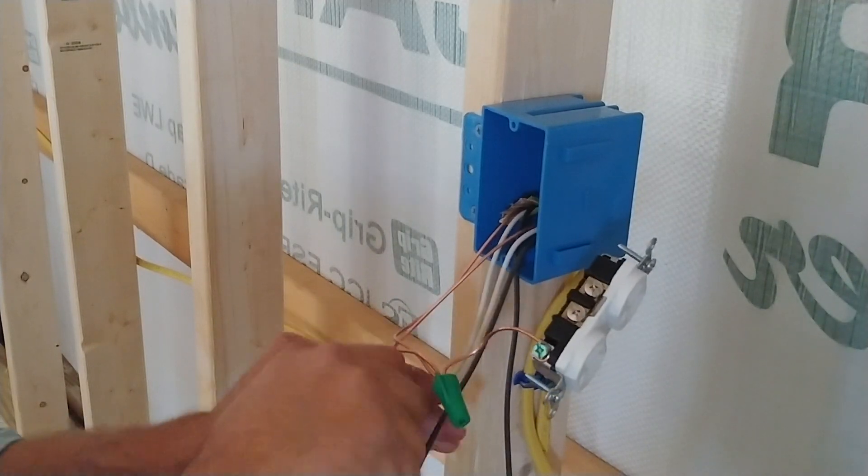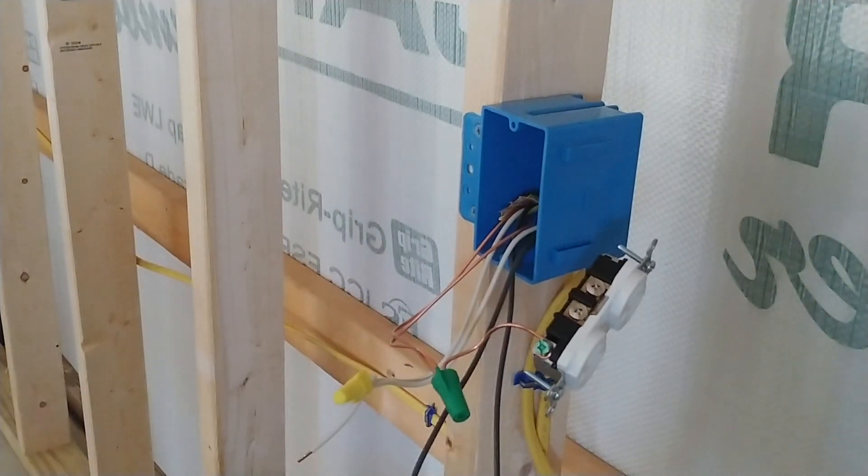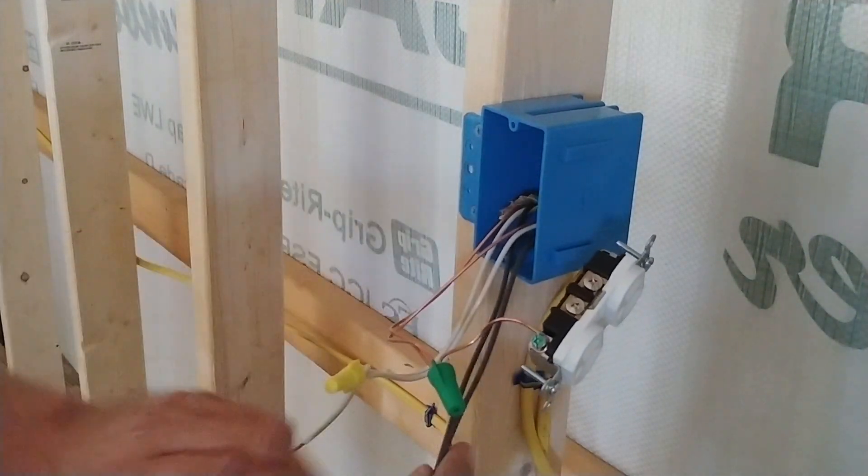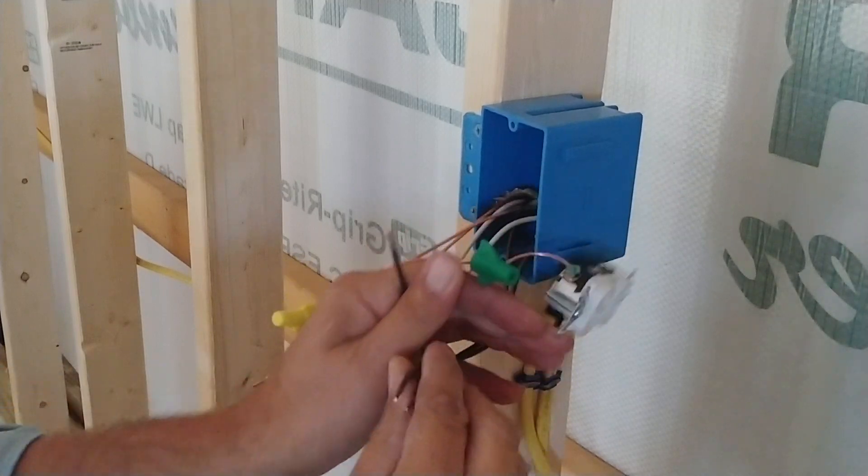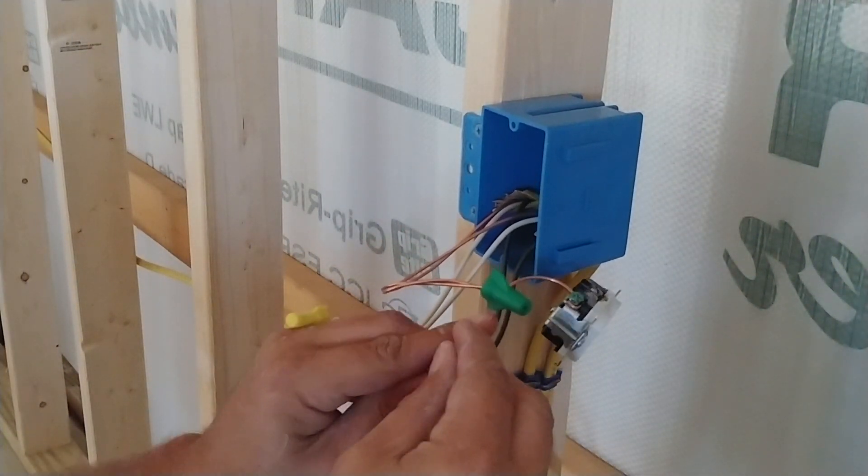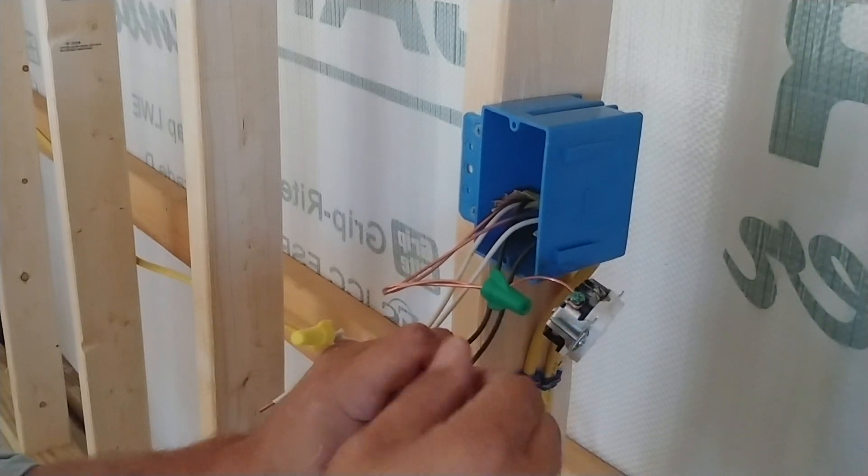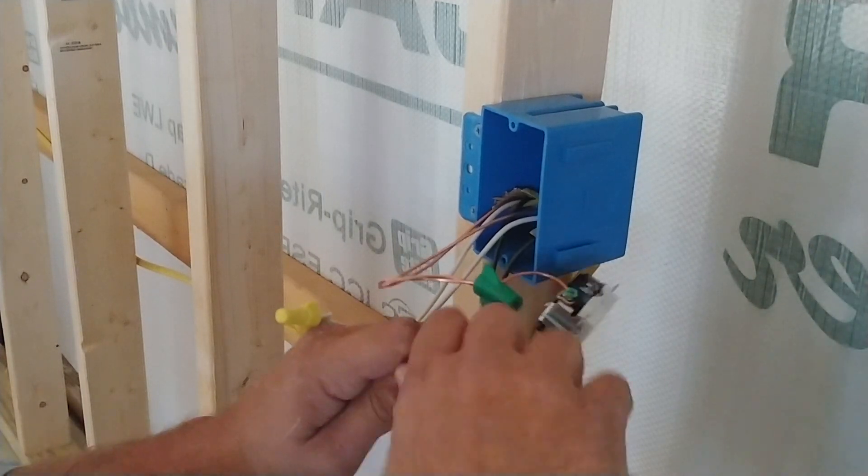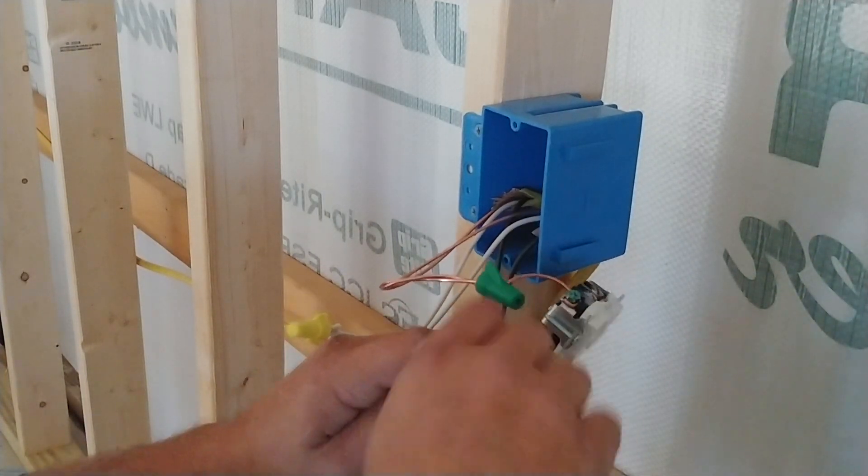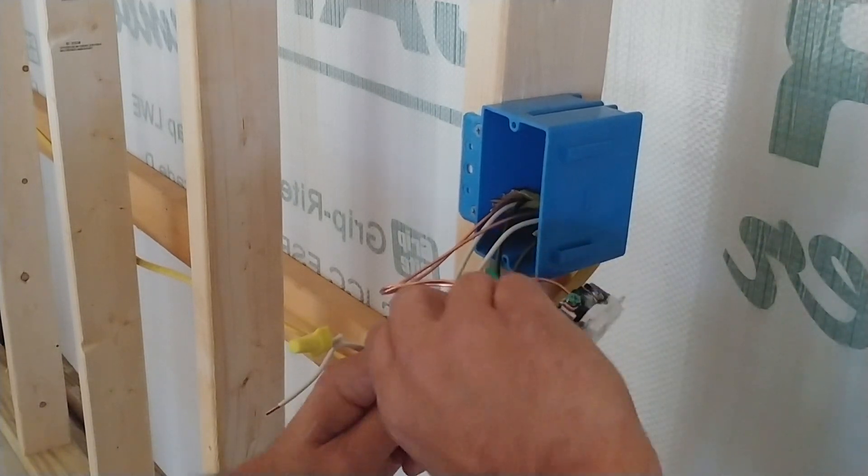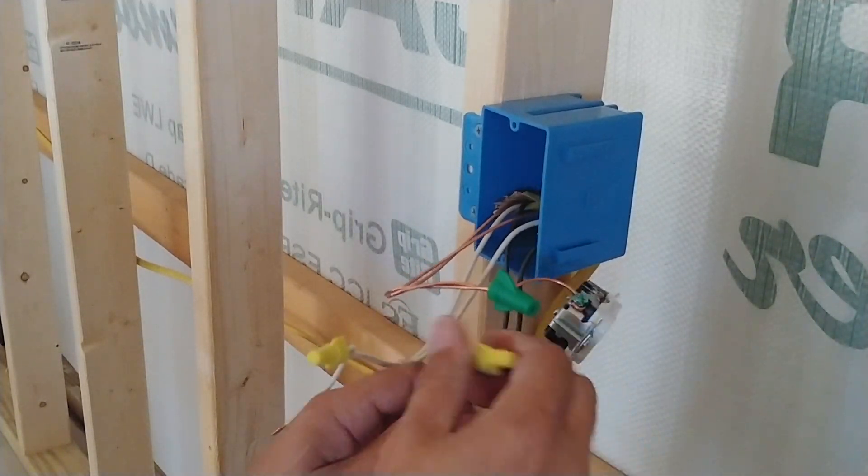And then we're going to do the same thing with the black after we get the white done. And again, this is number 12 wire, so it is a pain to work with. And again, now we're going to do the same thing we just did with the neutrals with the black. We're going to take our wire, put them in there, twist them together, and give us our other, our last pigtail, which is our hot. Now it's nice and tight.